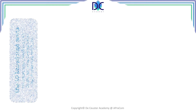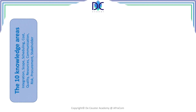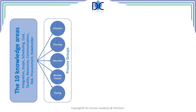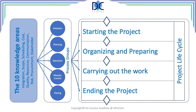We've seen this graph already before. We have the 10 knowledge areas that we will be talking about. We see that they are linked to the different process groups, and then we look at the project life cycle where we look at starting the project, organizing and preparing, carrying out the work, and ending the project. That's the link between the process groups and the project life cycle.